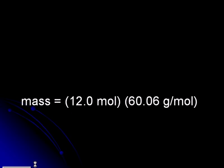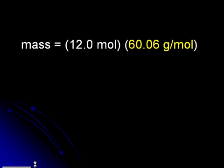Since the question is asking for the amount of acetic acid in grams, we need to multiply the number of moles by the molar mass. The molar mass of acetic acid is 60.06 grams per mole.